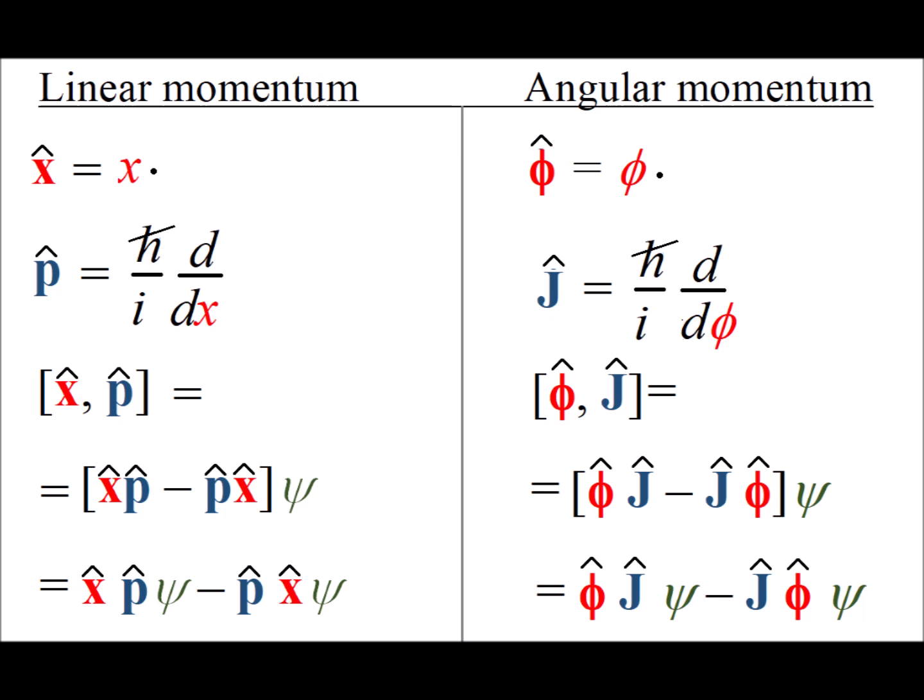In each case we are using the quantum mechanical version. So we also have the linear momentum operator p hat and its quantum mechanical definition of h-bar over i times the derivative with respect to x. The quantum mechanical version of the angular momentum operator j-hat, which is h-bar over i times the derivative with respect to phi.